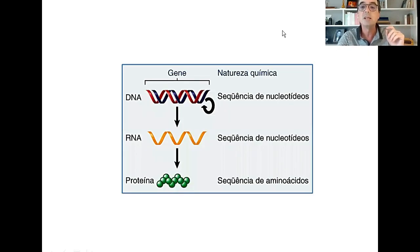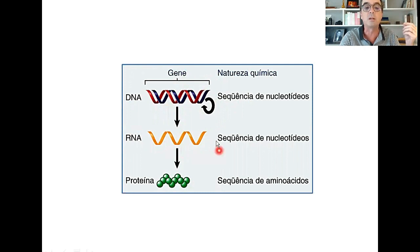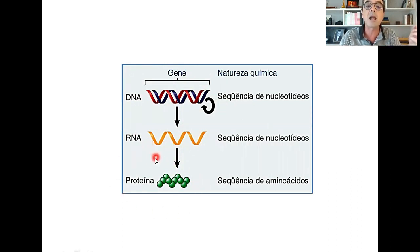Daí nasceu a ideia que passou a ser conhecida amplamente — que nós vemos aqui nessa figura, representada em muitos livros de biologia e de genética — onde uma molécula de dupla fita de DNA, que é capaz de se replicar, pode transferir essa informação de nucleotídeos para uma outra molécula de RNA, que serve de intermediário. No caso dos eucariotos, ela sai do núcleo para o citoplasma e lá comandaria a síntese de proteínas.